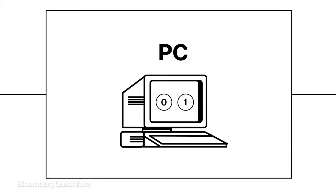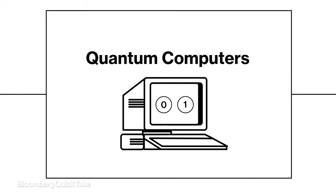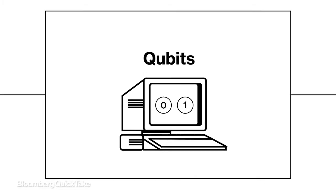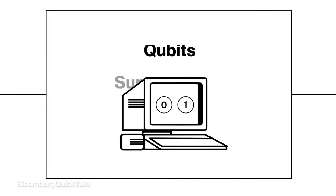The computer you're using now processes information in bits that can represent two possible states, one or zero. Quantum computers use quantum bits, or qubits, which can represent one or zero, or both at the same time. This is called superposition.